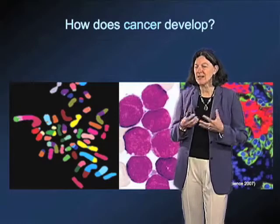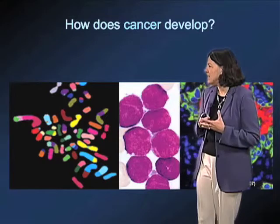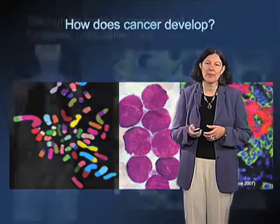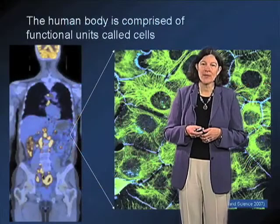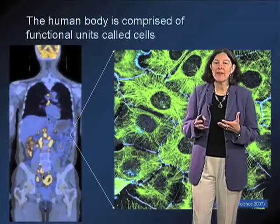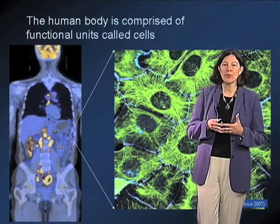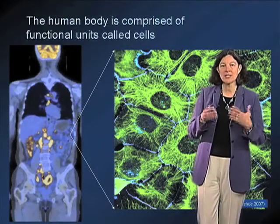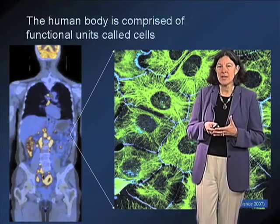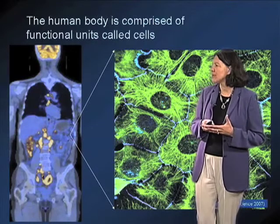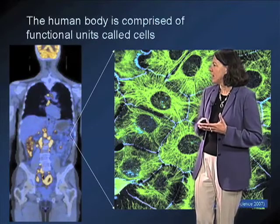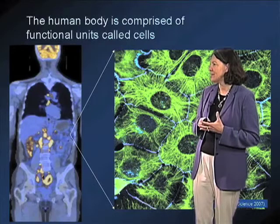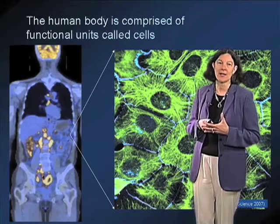What is the basis of cancer? How does cancer develop in the first place? We have really appreciated over the last 20 or 30 years that cancer is a cellular disease that results from derangements in control pathways that regulate cell number.